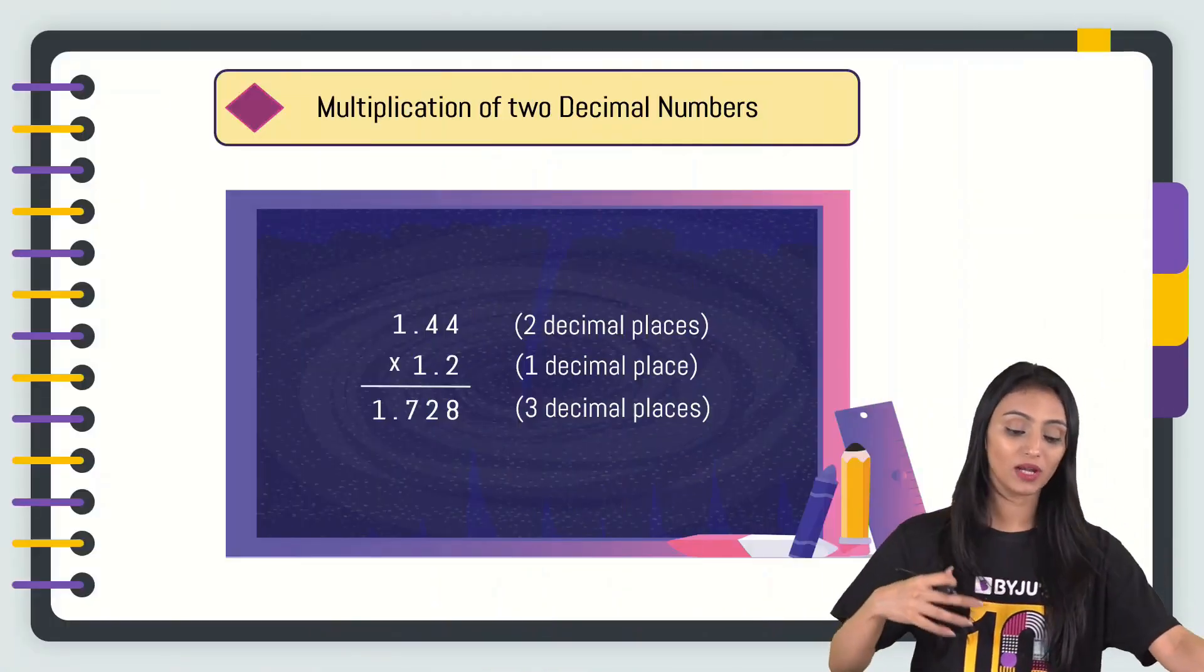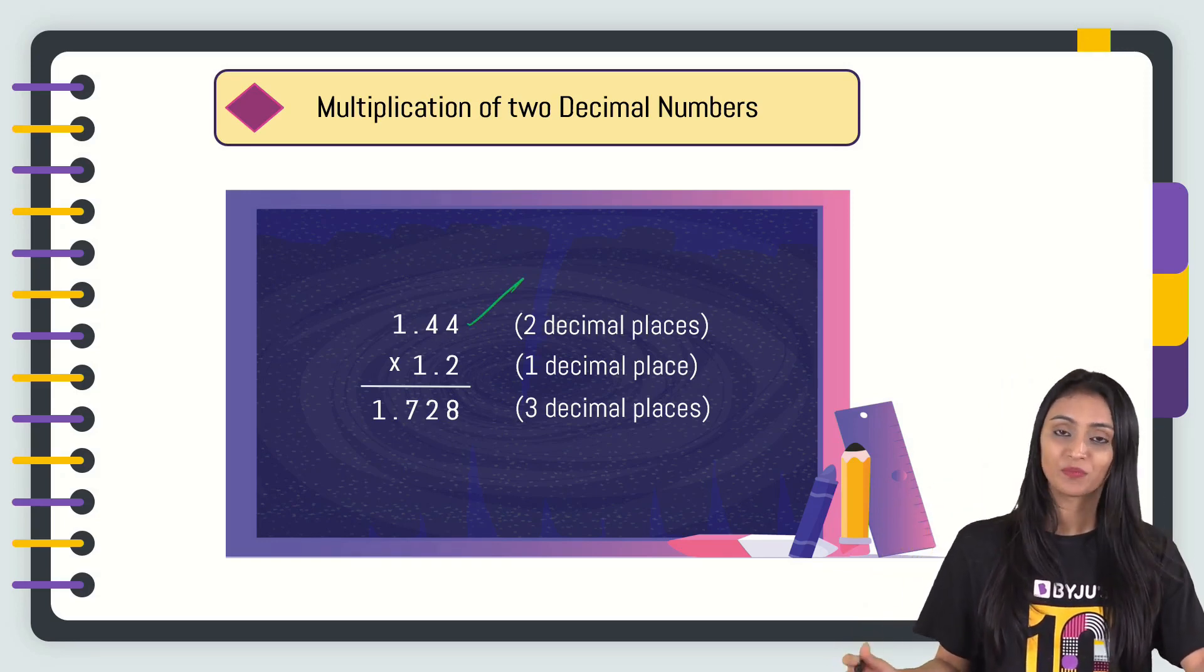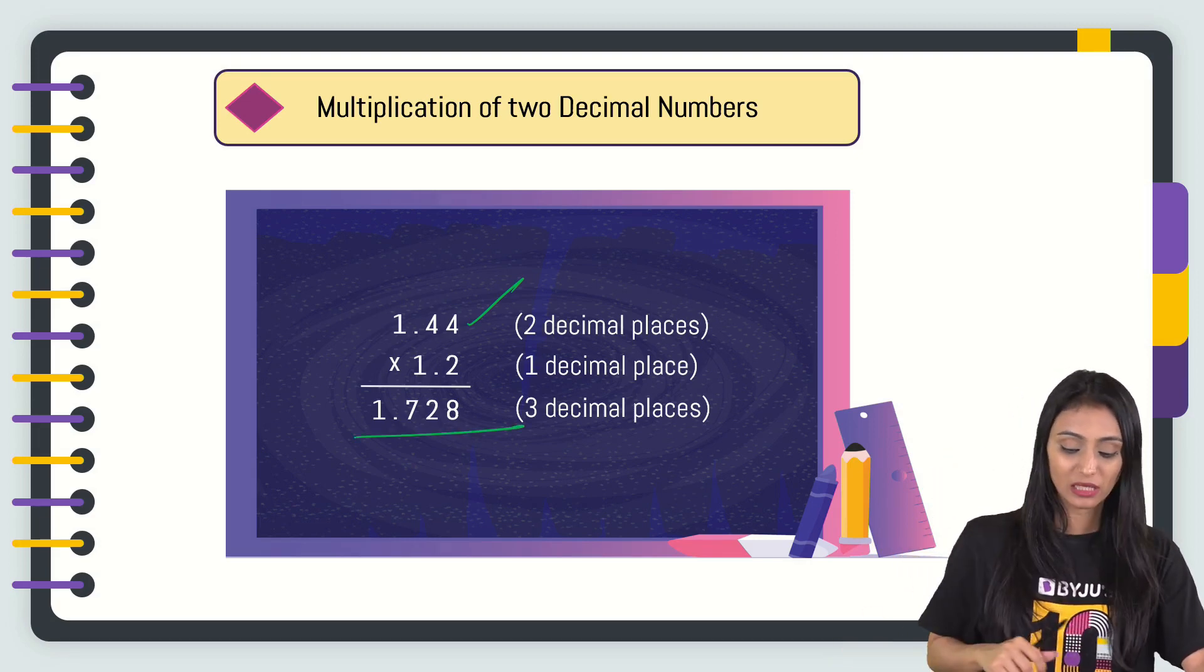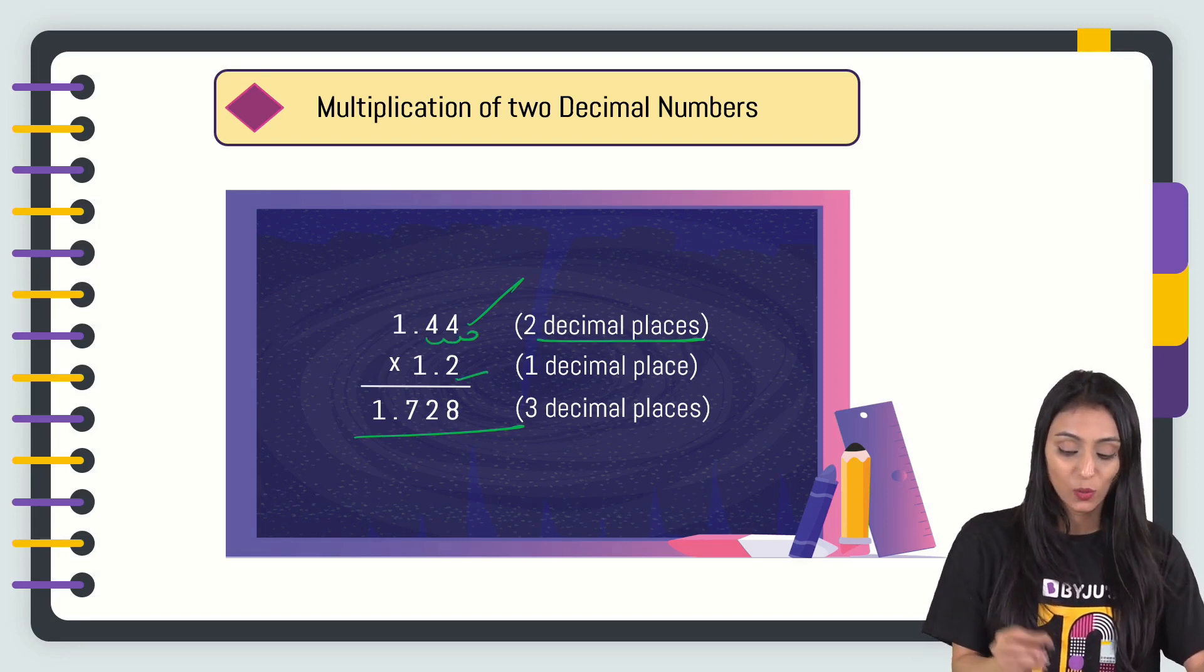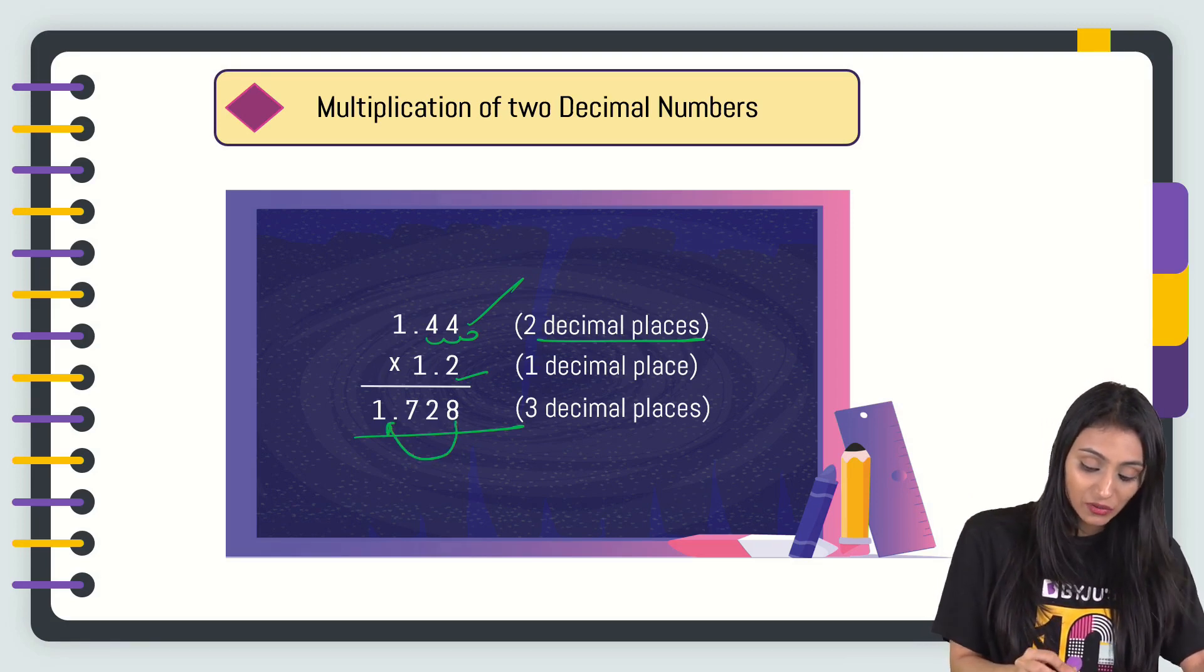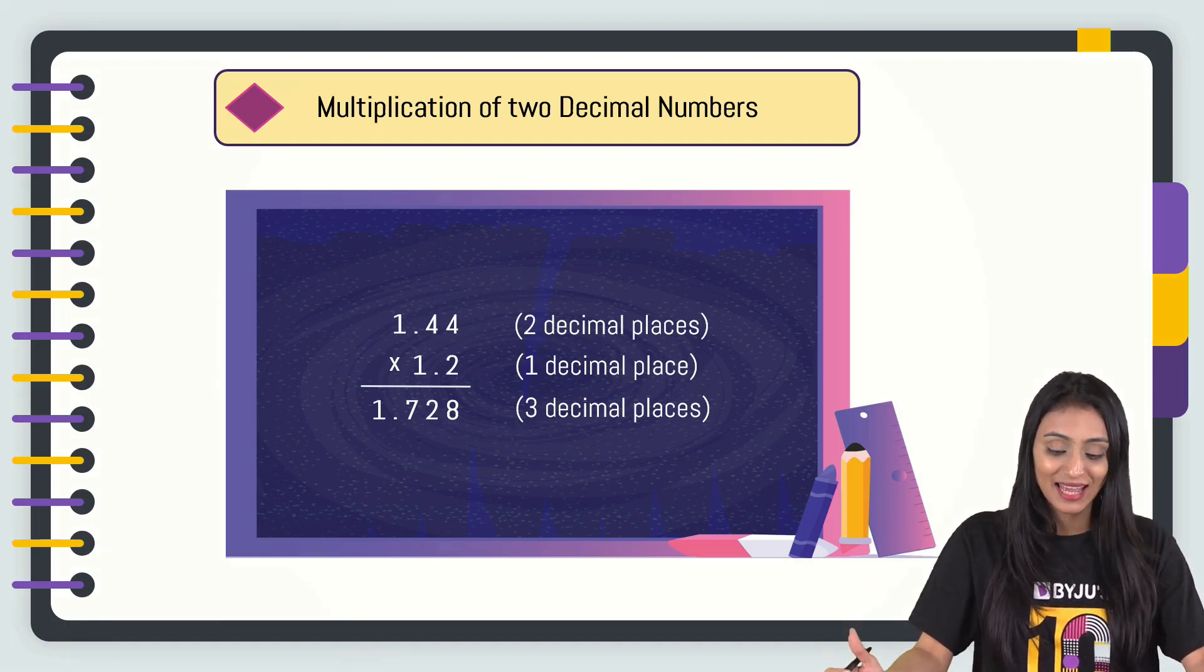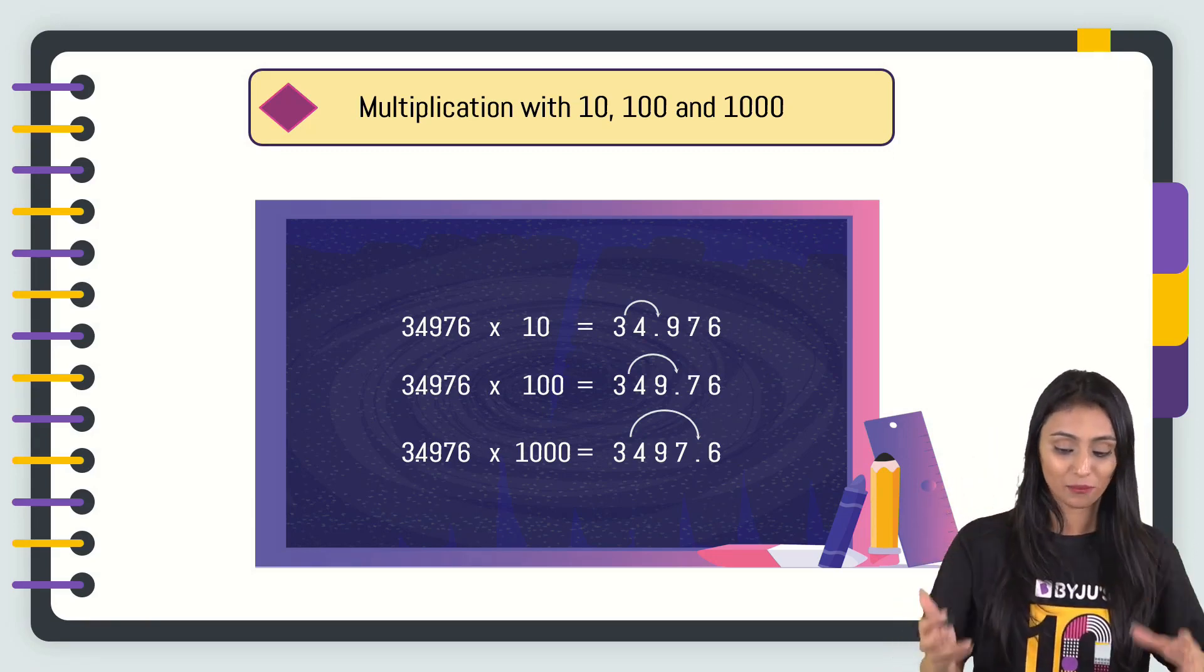Now let's take another example where we will be multiplying 2 decimal numbers. We have 1.44 and 1.2. Forget the decimal for now. Just do normal multiplication. You would get 1728. Now how to put the decimal? In this number, we have 2 digits after the decimal point. In here, only 1 digit after the decimal point. In all, 3. So I will put the decimal after 3 digits starting from the right. That's going to be 1.728. That would be the answer. It's pretty simple. That's how we do multiplication of 2 decimal numbers.